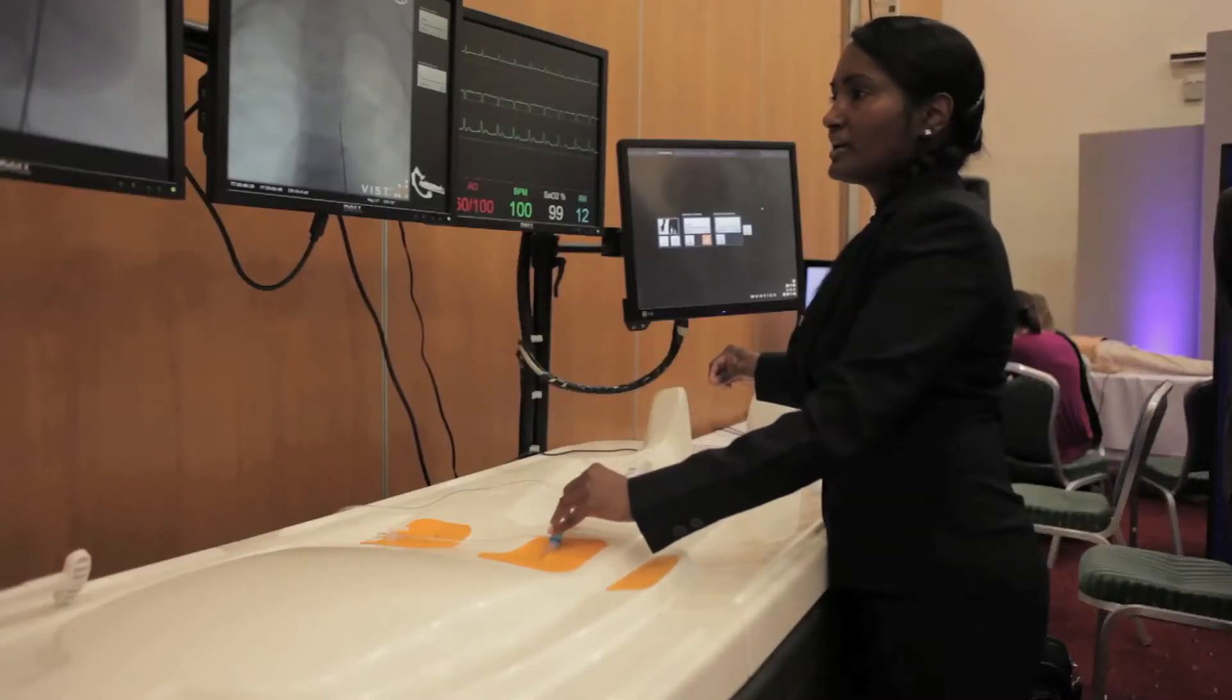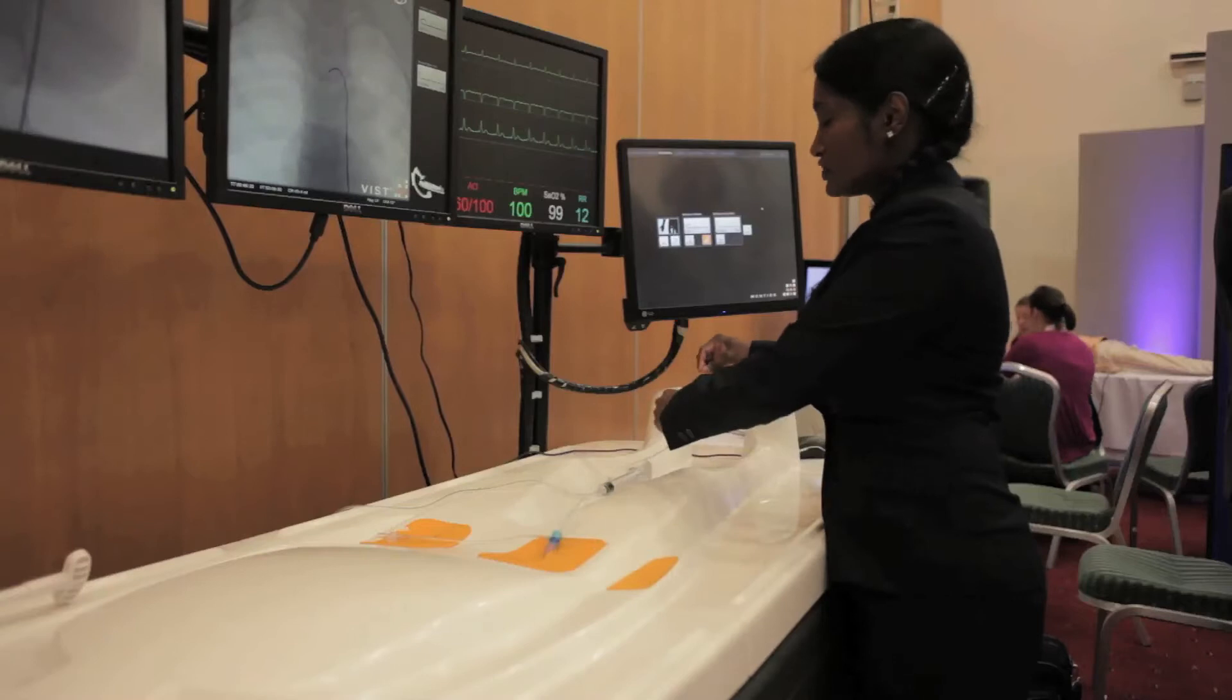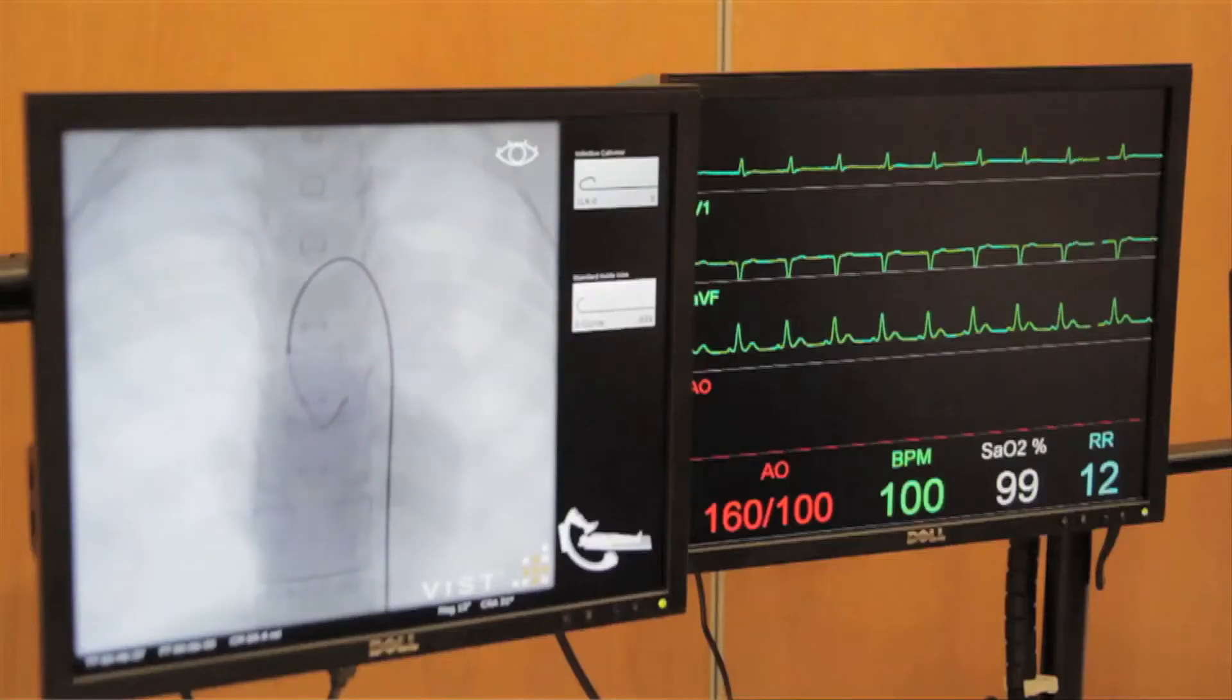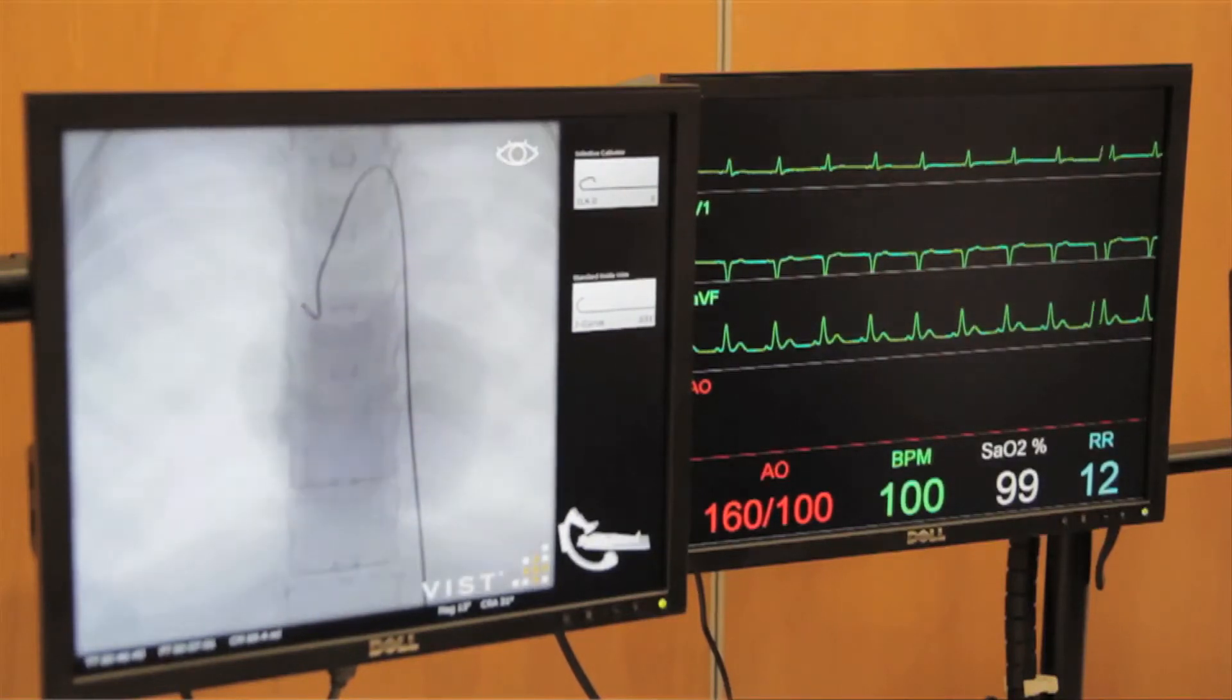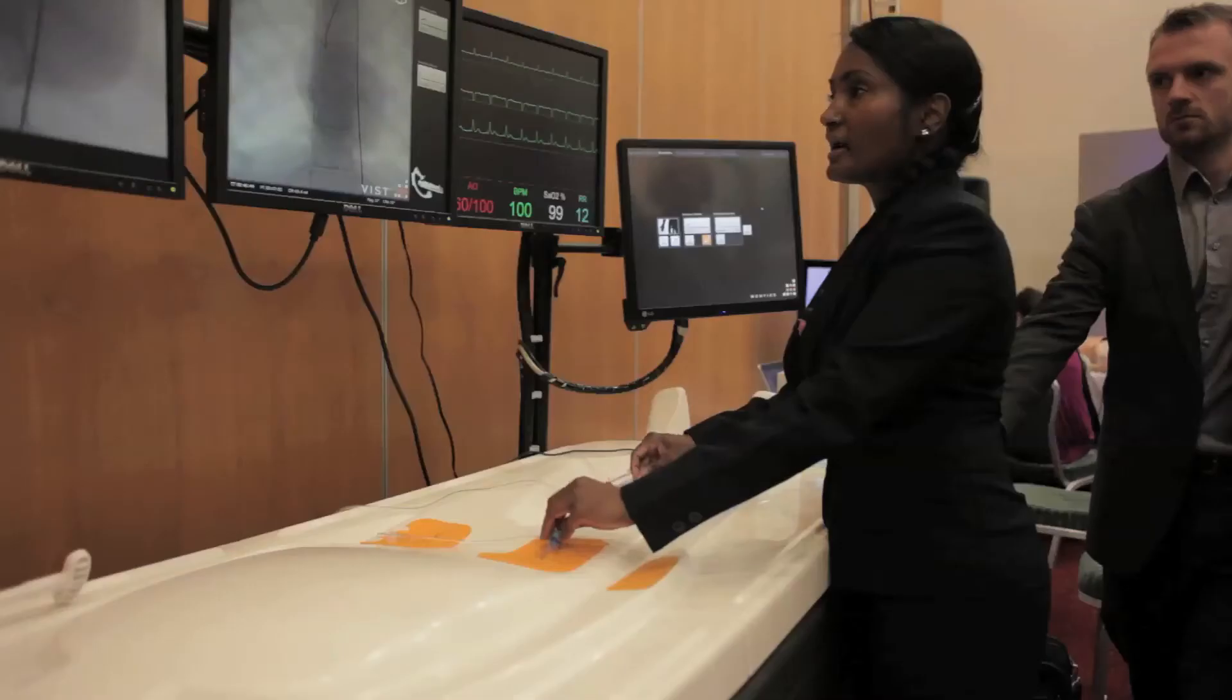In this case the wire has a tendency to go into the subclavian, which does happen in routine practice. So it is a matter of redirecting the wire into the ascending aorta and into the coronary sinus, and then you take the wire out.